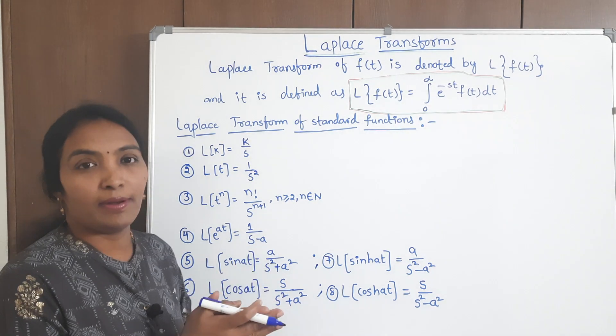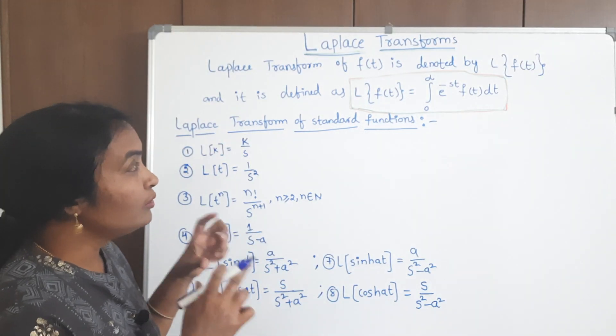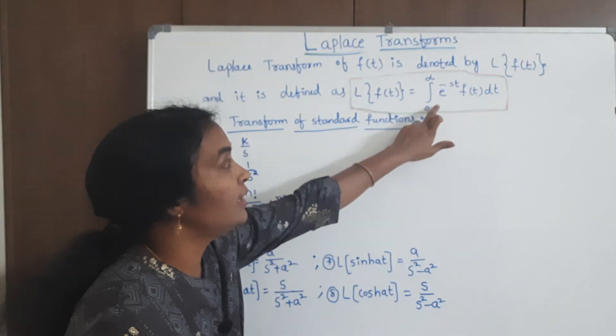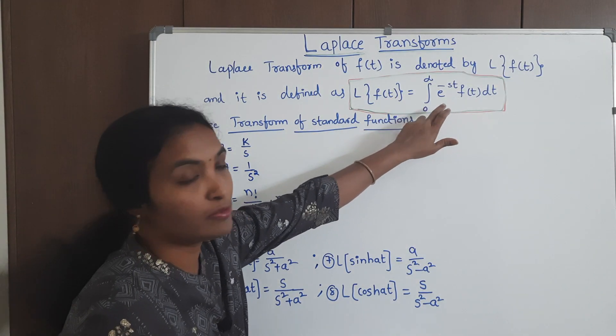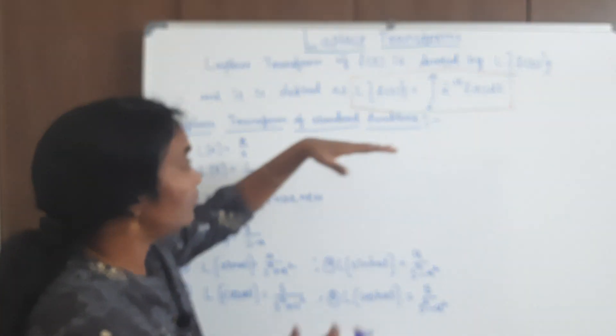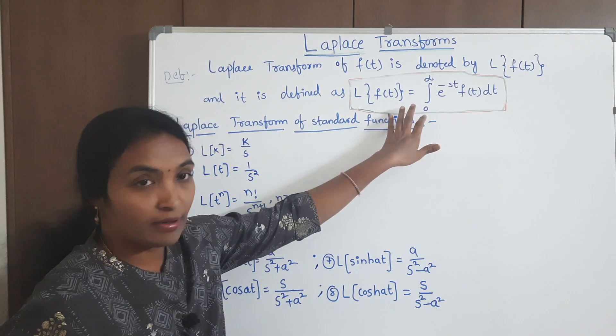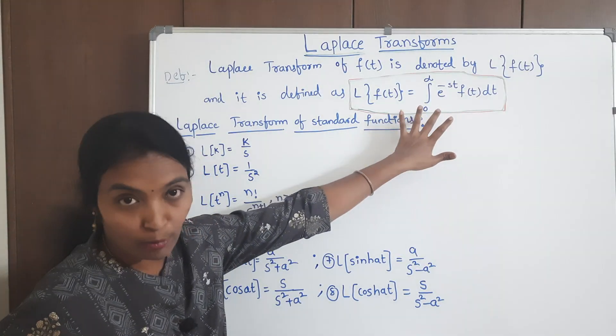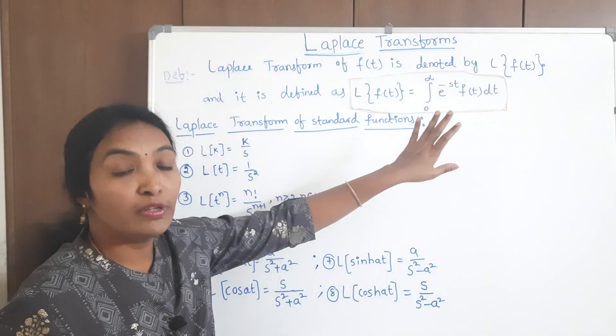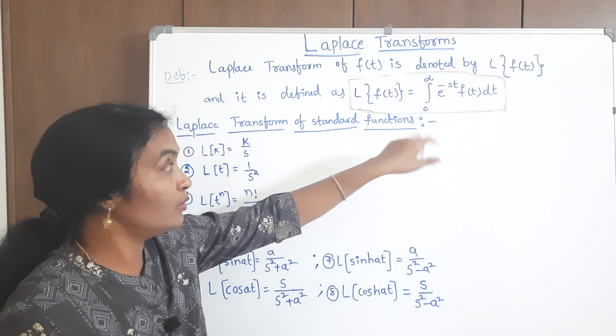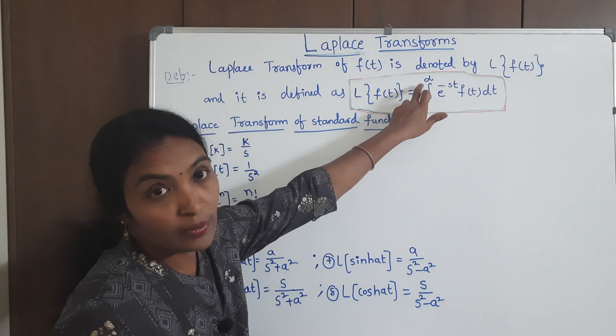So what is Laplace? Laplace means you can evaluate one function using a definite integral. Take any function — by using this formula, you can evaluate the function. The Laplace transform of f(t) is denoted as L{f(t)}, and it is defined as L{f(t)} = integral from 0 to infinity of e^(−st) f(t) dt. This is a definite integral, also called an improper integral, where one of the boundaries must be infinite.